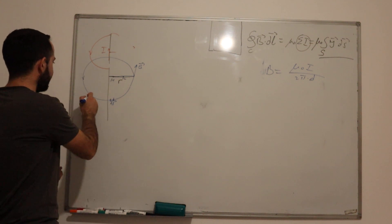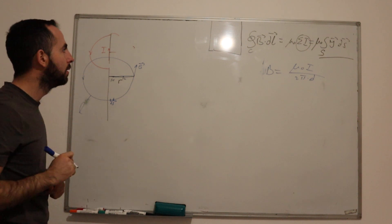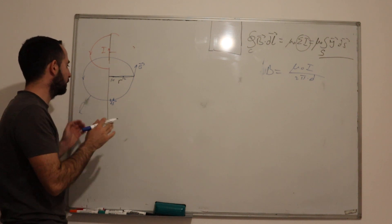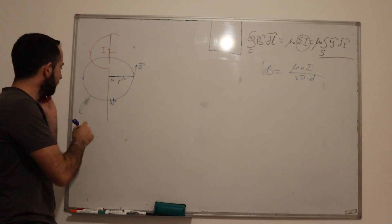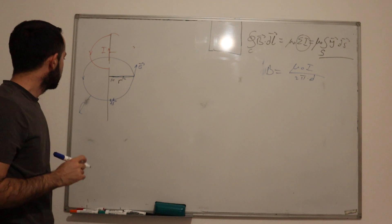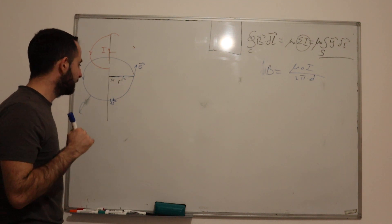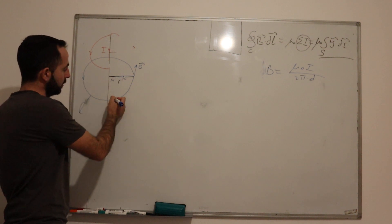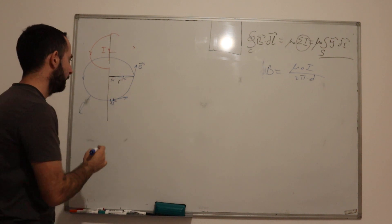So what is its direction? Its direction is the tangent on this circle,